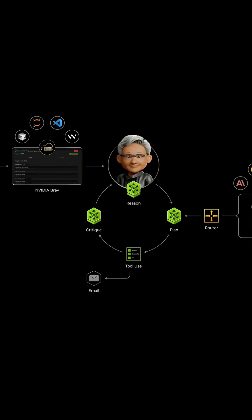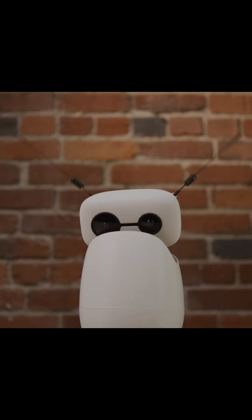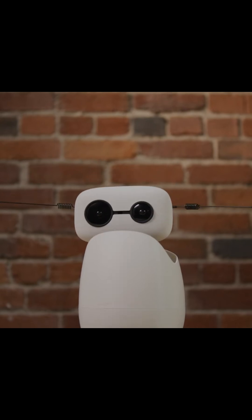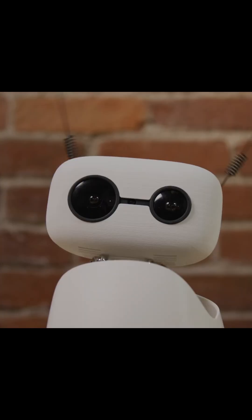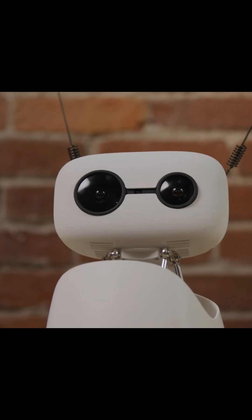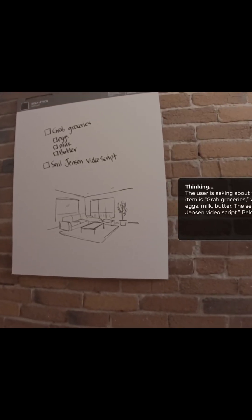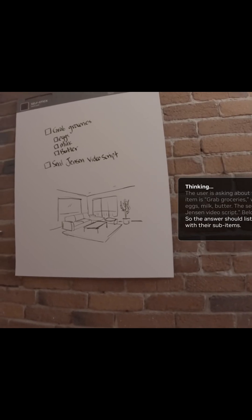I want my assistant to interact with my world, so I'll hook it up to Hugging Face's Ricci mini robot. My agent controls the head, ears, and camera of the Ricci with tool calls. Hi, I'm Ricci, running on DGX Spark. Hey Ricci, what's on my to-do list today? Your to-do list today: grab groceries — eggs, milk, butter — and send Jensen the new script.